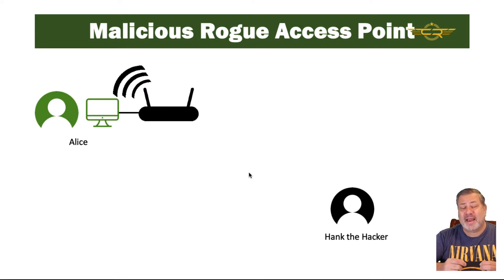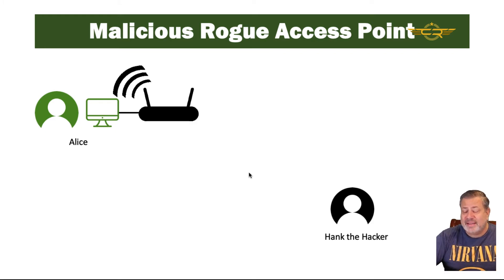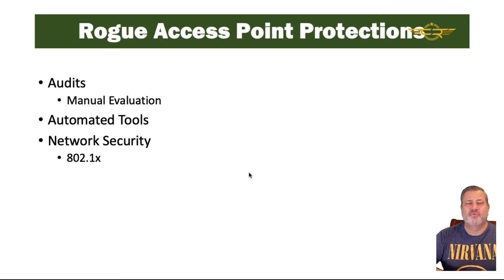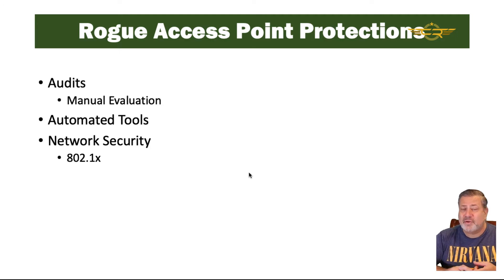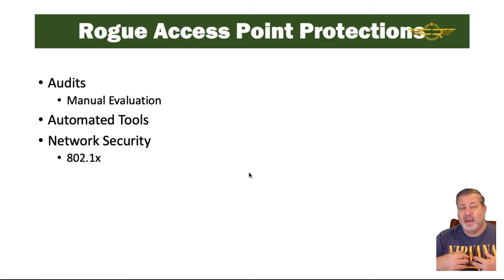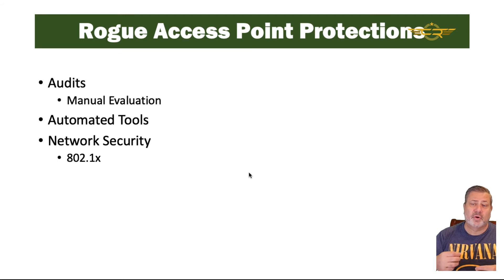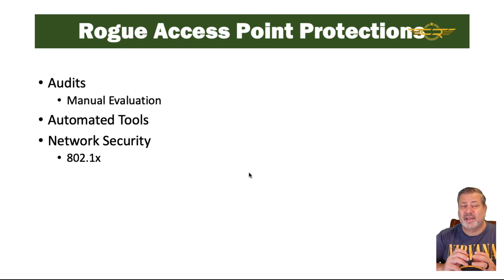In other cases, attackers may attach rogue access points to our network so that they can access the network from remote locations. In either case, we must look out for rogue access points on our networks. We should do audits with manual evaluation using wireless tools to look for unauthorized access points. We can also use automated tools, including network-based tools that will actively monitor your network all the time for rogue access points. We can also put network security protocols in place like 802.1x.